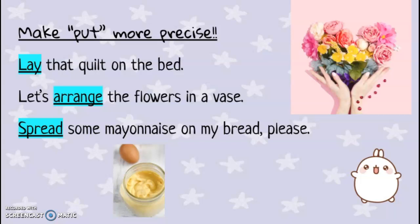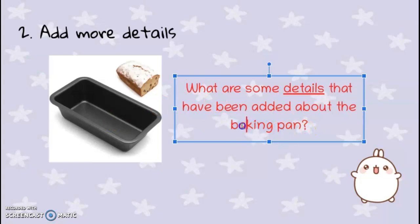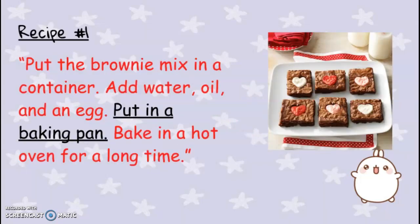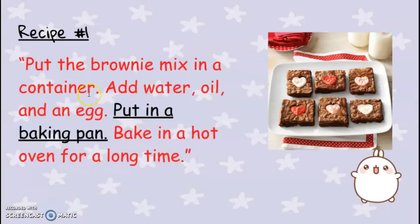The second way to make things more precise is to add more details, which we practice when writing essays. Looking back at the recipes, what are some details that have been added about the baking pan? Pay attention to the details added. Here's the first recipe, and here's the second. The second one tells you exactly the measurement of the pan and the shape of the pan, whereas the first recipe just says "put it in a baking pan" — as if you could use any type of baking pan.